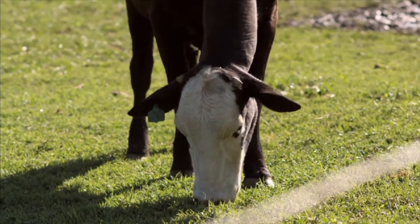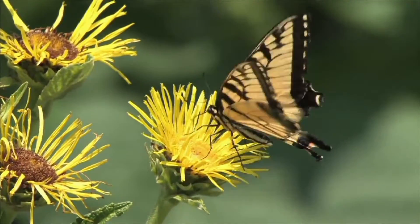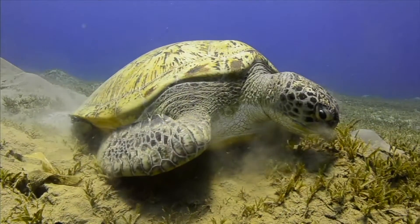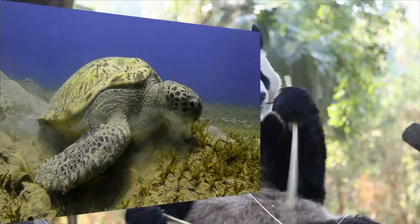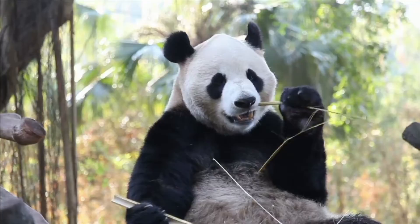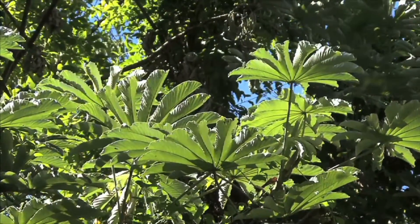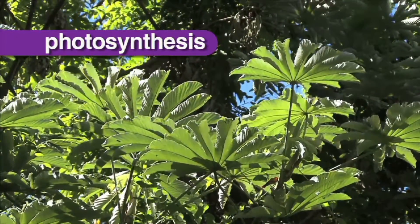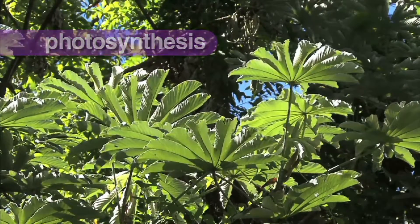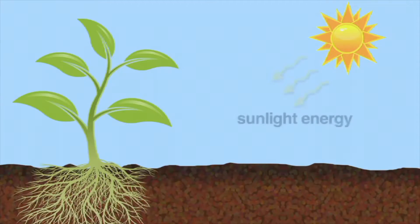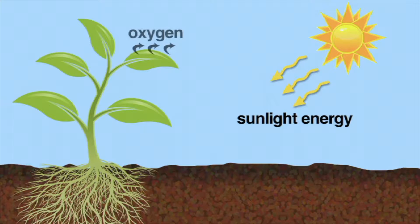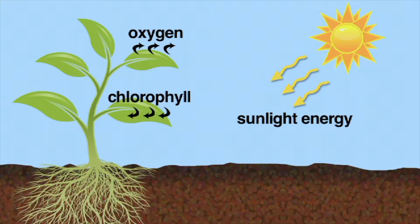Almost all other living creatures on Earth depend on plants to survive. Unlike other living organisms, plants can make their own food through a process called photosynthesis. Photosynthesis is the process by which plants use the energy of the sun to make food and oxygen. This is made possible by chlorophyll, the green pigment located mostly in the leaves of the plant.